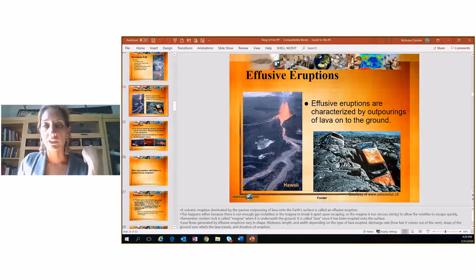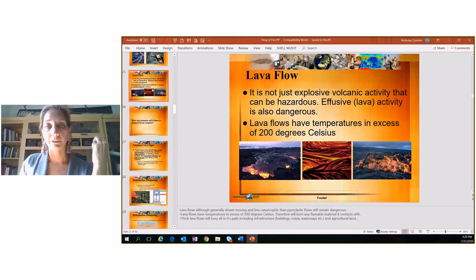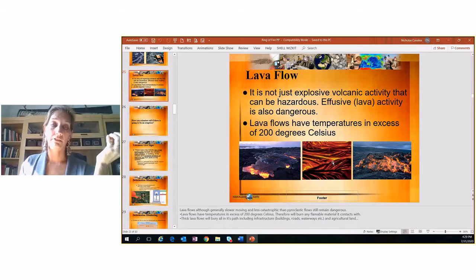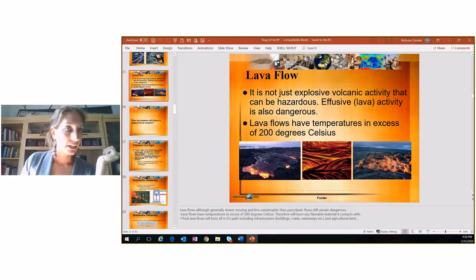Effusive eruptions. Outpourings of lava on the ground. So you can see where this lava came through, destroyed these vehicles. Destroys the land around it. Lava flow, not just explosive that's dangerous, but this lava can come even after. And it can be in excess of 200 degrees Celsius, which is pretty darn hot. And you can tell because it's like glowing and hot and molten in this picture. But the good thing about lava is that even though it's extremely hot and dangerous, it actually moves very slow. So if animals or people need to get out of the way, they usually have enough time to.